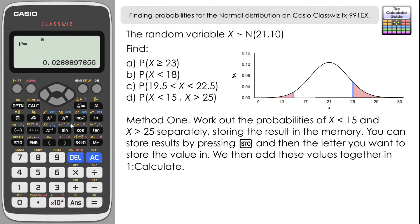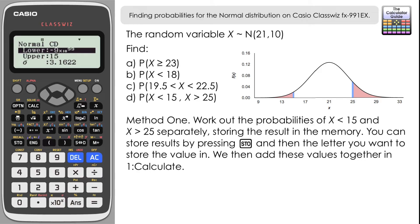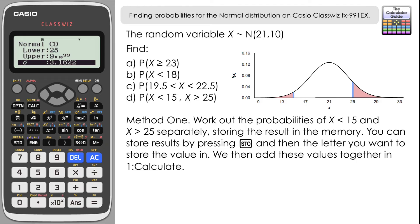Standard deviation and mean are the same, so press equals to confirm. We get the value 0.028... and I'm going to store that into A. Press AC again. For the upper region, the lower value is 25 and the upper value is as high as we can go — 9 × 10⁹⁹. Standard deviation and mean the same once more, so press equals. Here we have the probability of the upper section, and we store that in B.